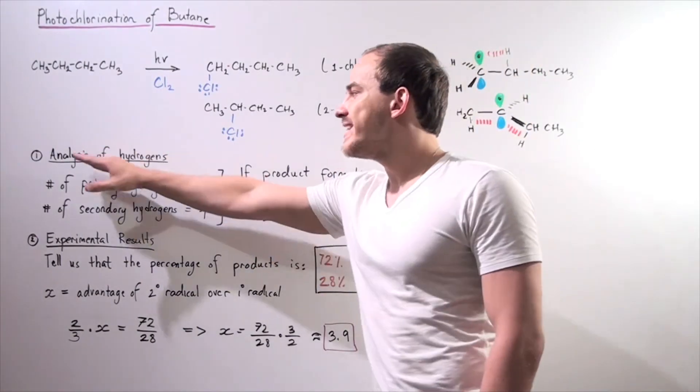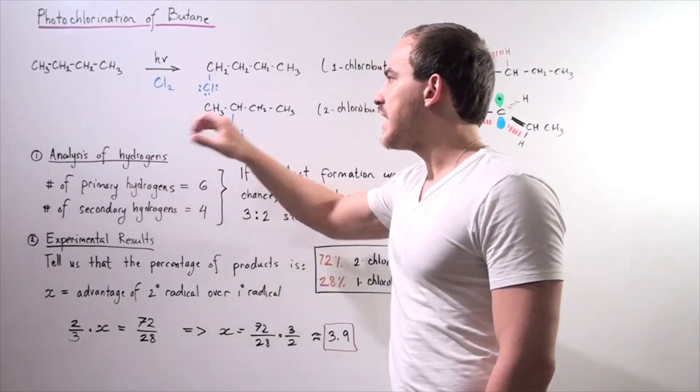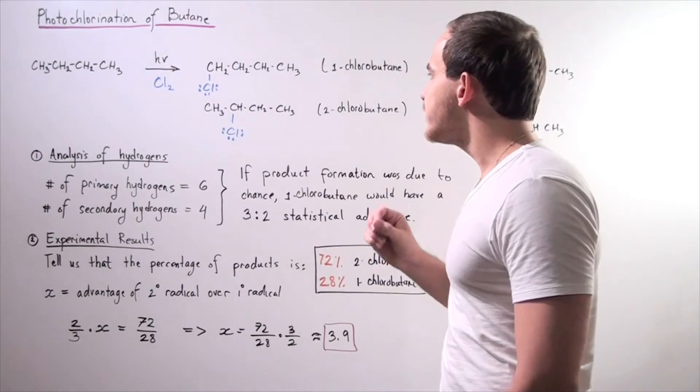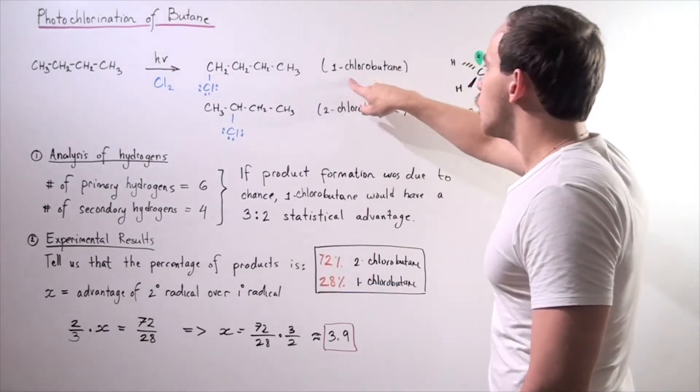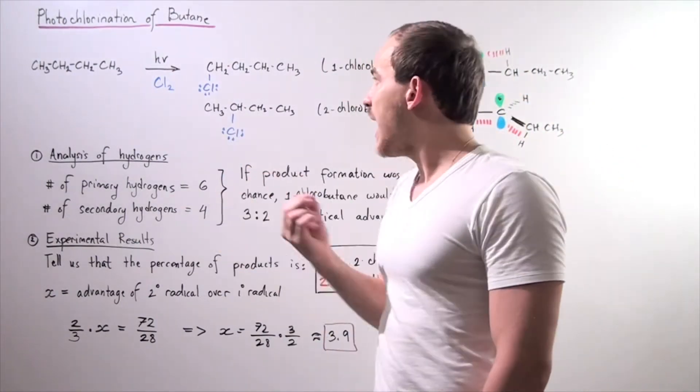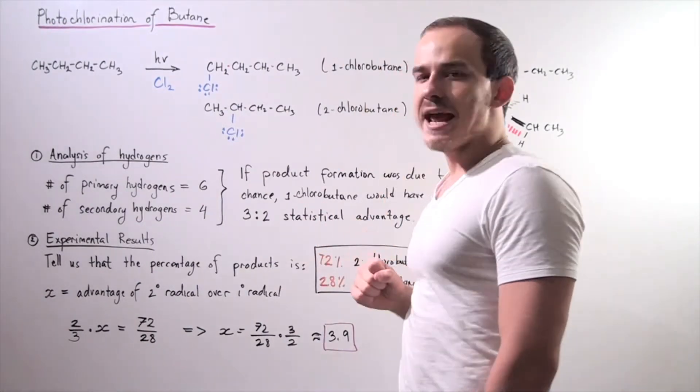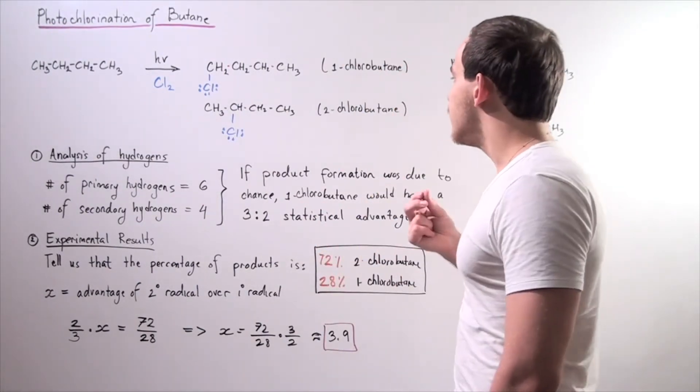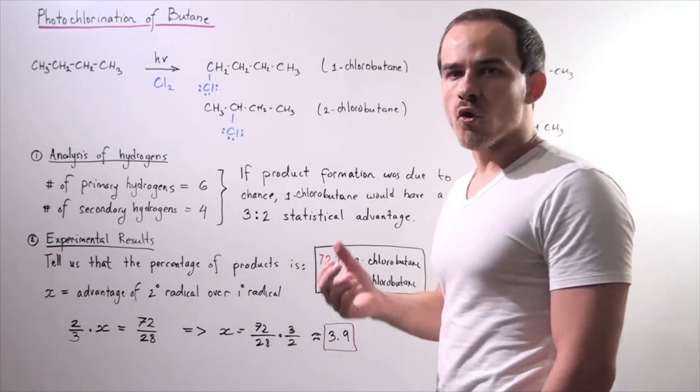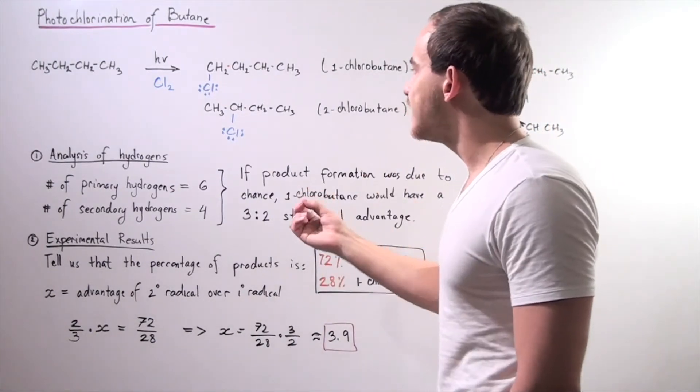So let's begin with our analysis of hydrogen atoms. In other words, notice that in order for one-chlorobutane to form, we must abstract a primary H atom. Likewise, in order for two-chlorobutane to form, we must abstract a secondary H atom.